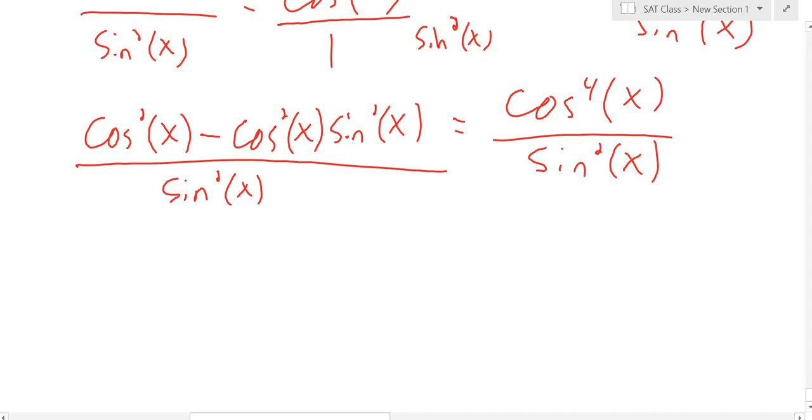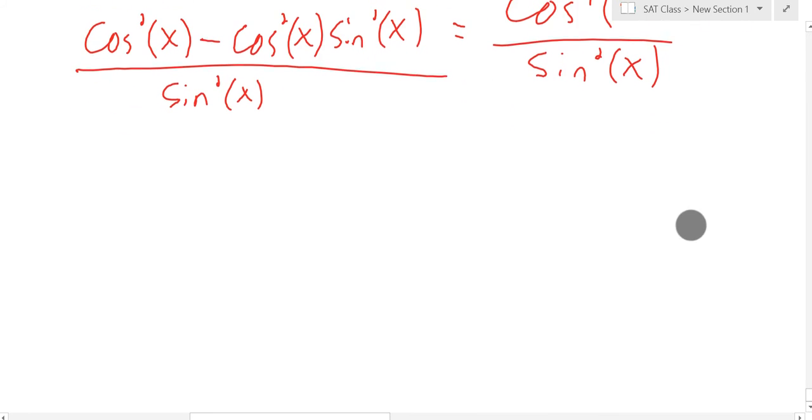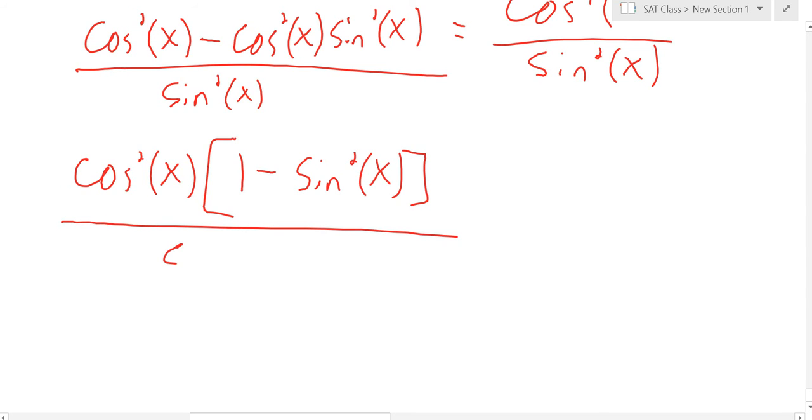And I gave you those seven steps. So at this point, what can we do? Let's factor. Yeah, very good. Let's factor out cosine squared up top, right? And if you factor out that cosine squared, that leaves you with one minus sine squared. And that's all over sine squared, like we want it to be.